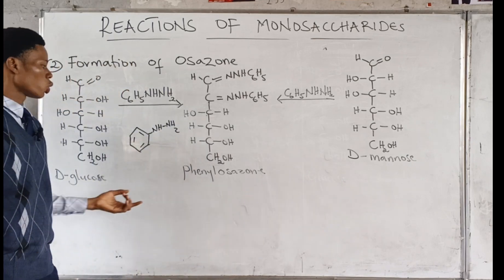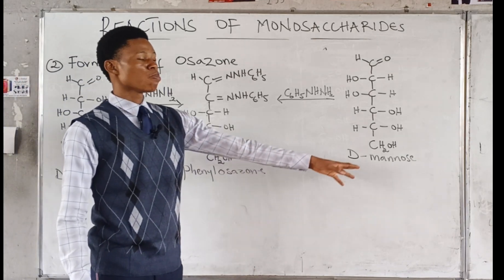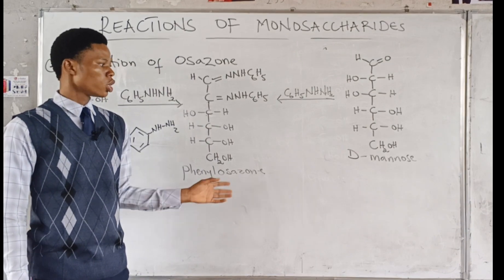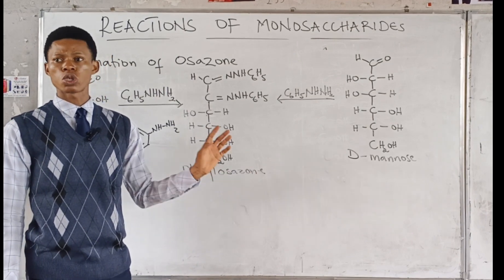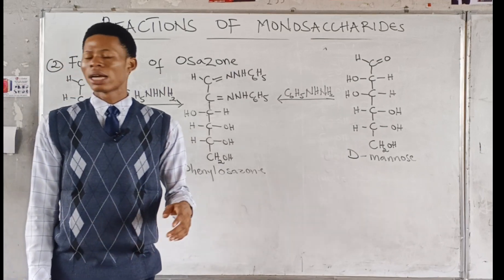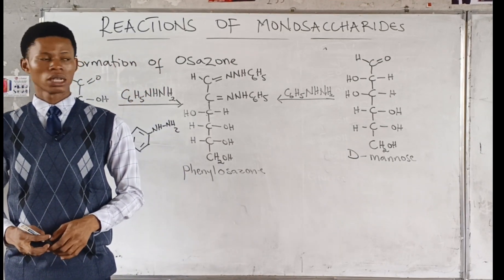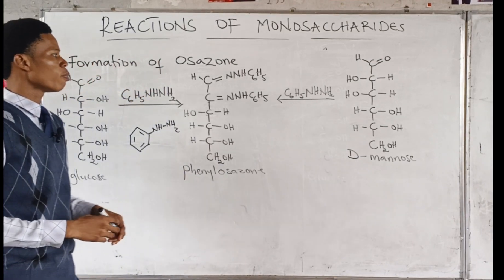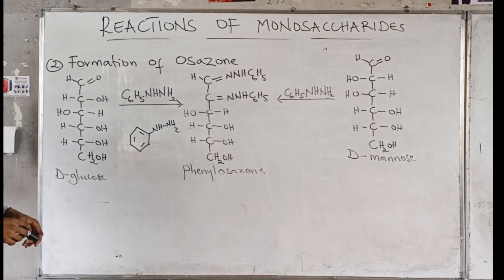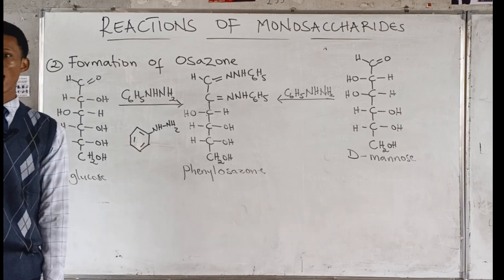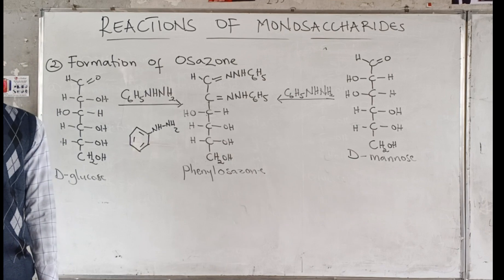The most interesting part is that if you use glucose you form the same phenylosazone as if you use mannose. Glucose and mannose are epimers — they differ in position two. So a C2 epimer of glucose is mannose, and both form the same osazone.